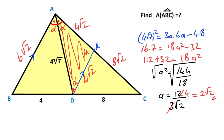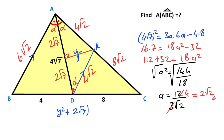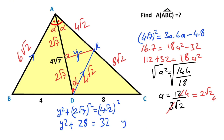If you focus on triangle AKD, this triangle is isosceles. So if you draw a perpendicular line onto the base, the base is divided into two equal parts. Let's call this height y. Applying the Pythagorean theorem: y² + (2√7)² = (4√2)². Therefore y² + 28 = 32, which means y² = 4, so y = 2 units.